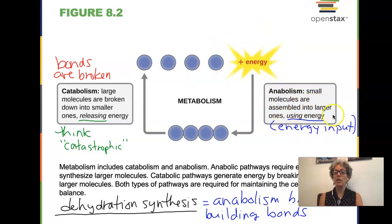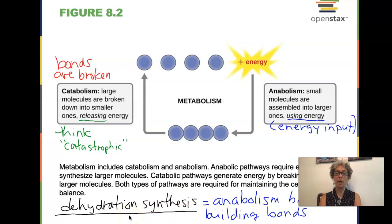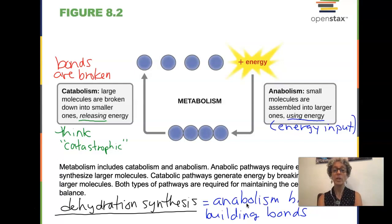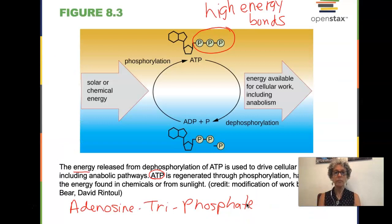I remember catabolism has the same prefix as catastrophe, where things fall apart. So catabolic reactions break things down and we release energy. That energy can be used in anabolic reactions. Anabolism uses energy input from catabolism to build molecules we need in our cells. Dehydration synthesis that we saw in our macromolecule chapter is anabolism because we're building bonds. We can't just spontaneously throw two glucose molecules together and expect them to build a maltose — we would have to provide energy for that to happen.